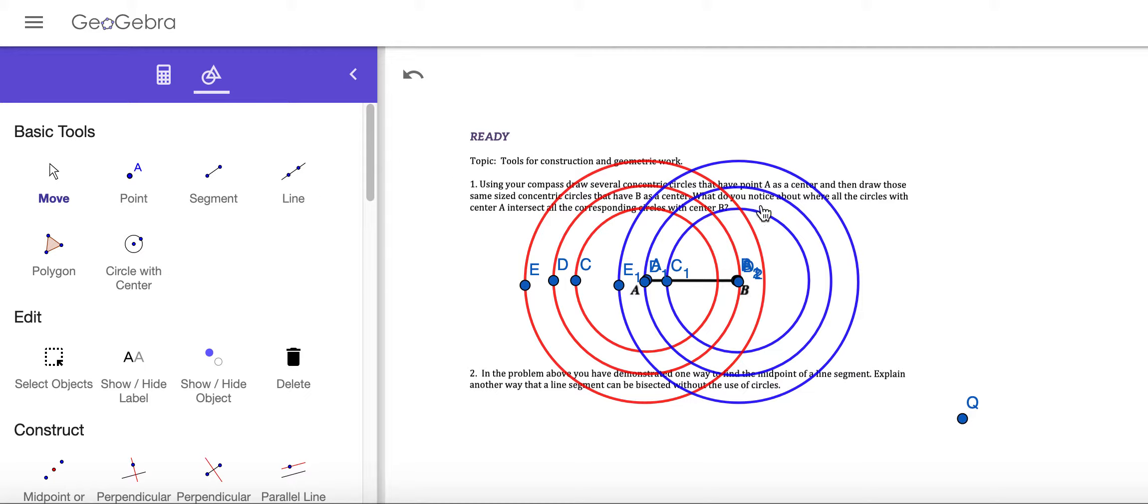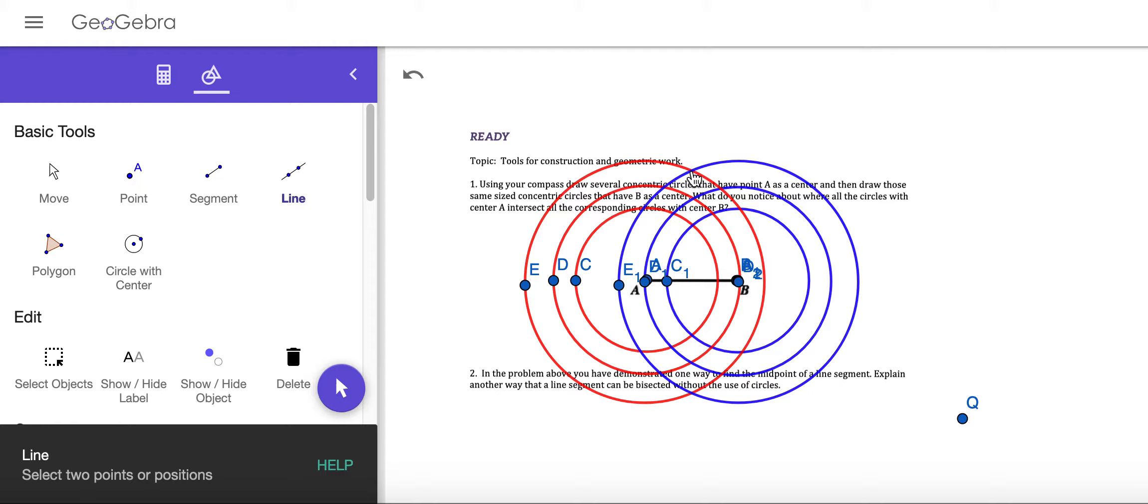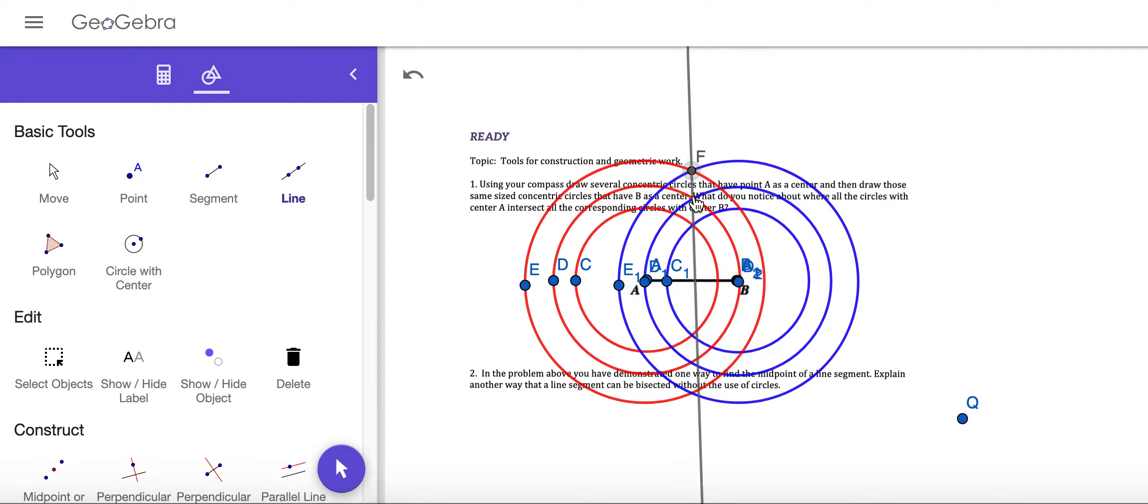What do you notice about where all the circles with center A intersect and all the corresponding circles with center B intersect? So if you look, they intersect here, here, here, here, here, here, they all intersect at the same line.